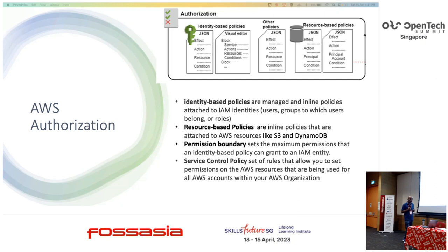Third is permission boundary. In the case of permission boundary, what you do is — for example, I have been given a role to manage my department. I should not have the privilege to go into another account or another department and start accessing resources there.